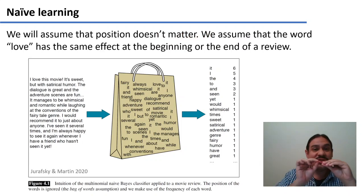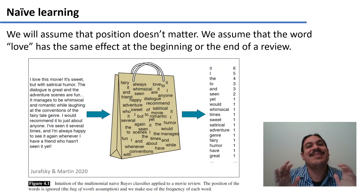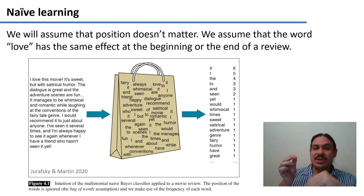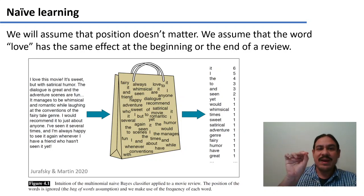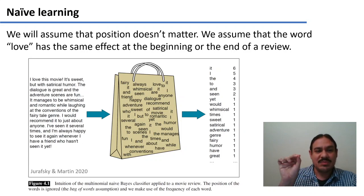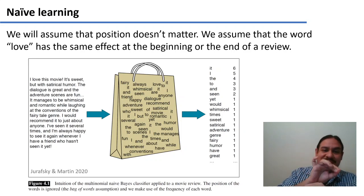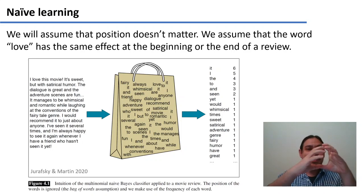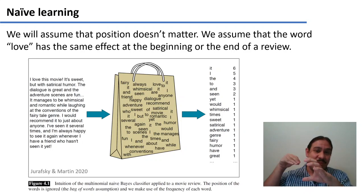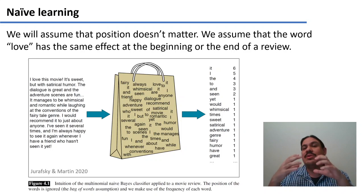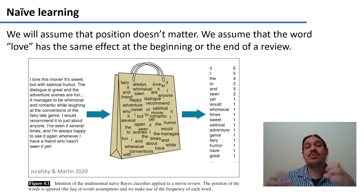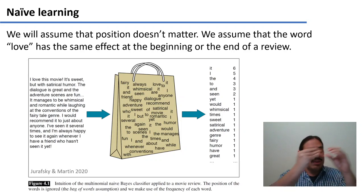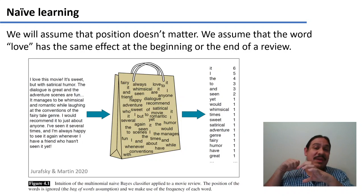We will assume that position does not matter. This is a very naive supposition. We assume that any word will have the same effect regardless of its position in the document. For example, the word 'love' matters the same if it's at the beginning, the middle, the end, followed by a certain word, or not followed by a certain word, and so on. By the way, we can put bigrams and trigrams into the bag of words — it's not just single words. But we will lose the exact ordering, and most importantly, we will lose information about their position in the whole document, so bigrams and trigrams in the bag of words are just going to be disordered.